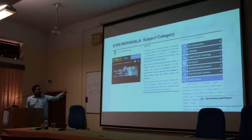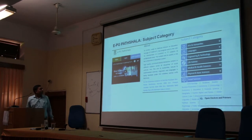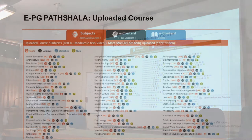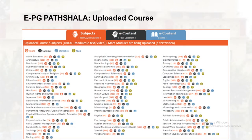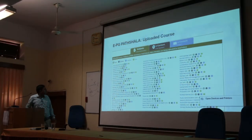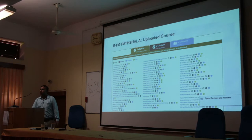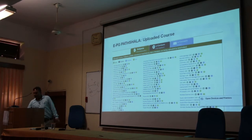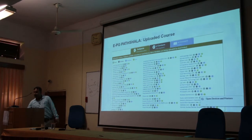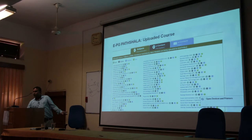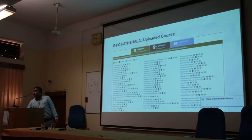It covers many subject areas, and you can see how much content is uploaded per subject — including adult education, architecture, and biophysics. There are 72 subjects taught at the university level with information available. Documents are available in PDF form which you can easily download.